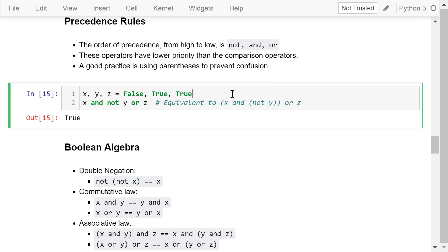Here is an example. We use simultaneous assignment to assign false, true, true to x, y, and z respectively. After that, let's check this expression. It is equivalent to this expression with parentheses. Because not has the highest precedence, and y is true, not y is false. Next, we proceed with the AND operation. Because x is false, so false and false is still false. Finally, let's check false or z. Because z is true, so false or true is true. The entire expression is true.